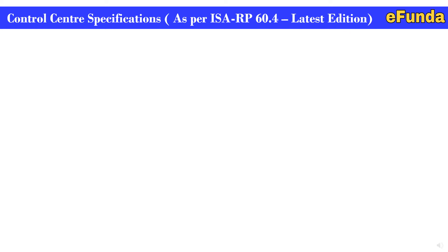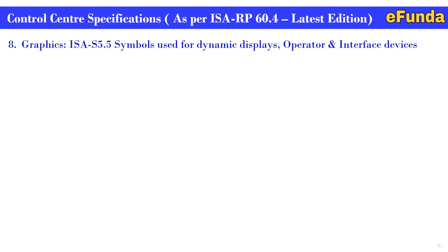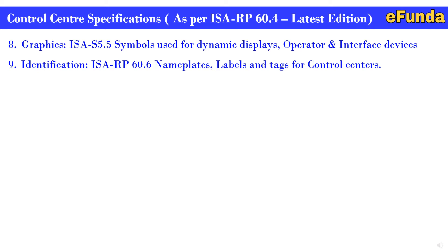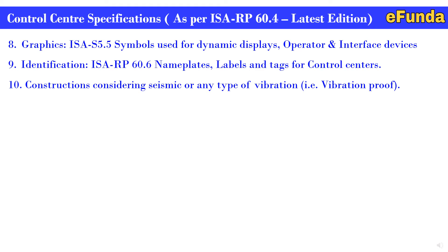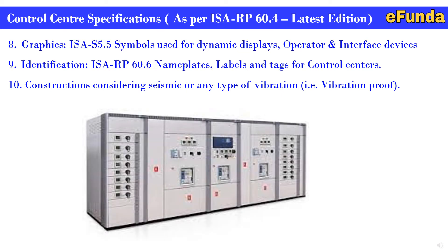Eighth point: graphics — ISA S5.5 symbols used for dynamic displays, operator and interface devices. Ninth point: identification — ISA RP 60.6 name plates, labels, and tags for control centers. Tenth point: construction considering seismic or any type of vibration — that is vibration-proof design. These are all the specifications considered while designing the control center. One can see the photograph where the latest standards are applied and construction of the control center panel is done systematically and aesthetically. This is how the control center should be covered with minimum requirements as per ISA RP 60.4 and client specification.